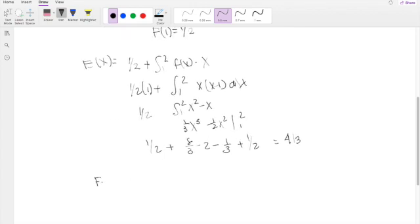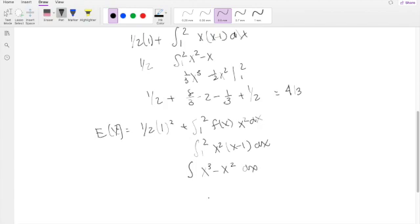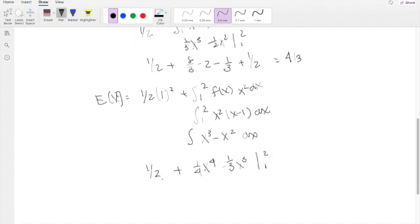The second moment is going to be the same thing but with x squared. So this is 1/2 times x squared, which is 1 squared, plus the integral from 1 to 2 of f(x) times x squared dx. Multiplying out, you get x cubed minus x squared dx. Taking the antiderivative, you get x to the fourth over 4 minus x cubed over 3, going from 1 to 2.